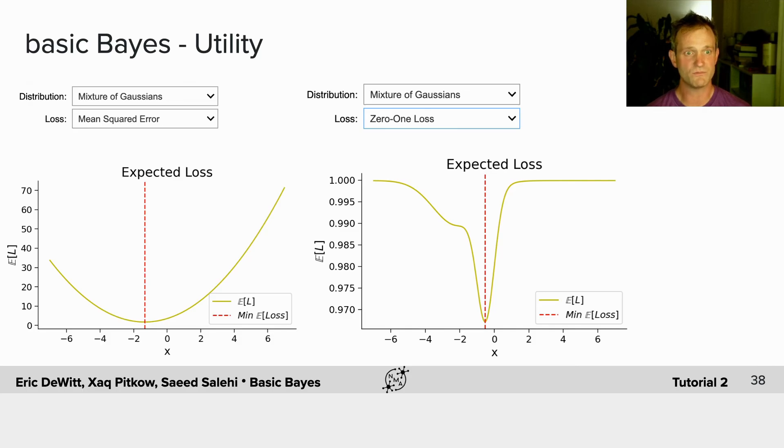So in this case, if I look at the mean squared error and its expected loss and the zero-one loss function, I'm going to see two different points, and they're going to correspond to the mean and the mode of the distribution.